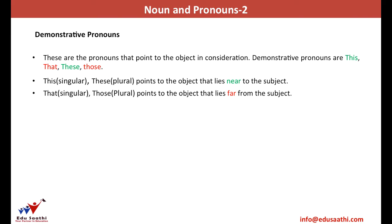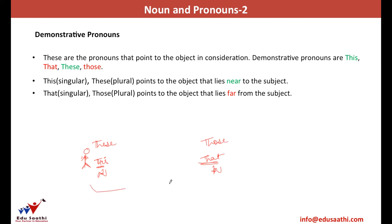We have demonstrative pronouns — four in number: this, that, these, those. 'These' is the plural of 'this,' and 'those' is the plural of 'that.' If you're standing somewhere and there are things nearby and things far away — if it's one nearby, you say 'this'; if it's one far away, you say 'that.' If there are multiple things nearby, it becomes 'these'; if multiple things are far, it becomes 'those.'